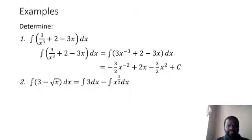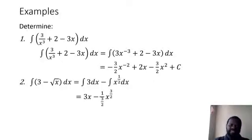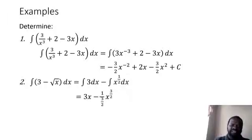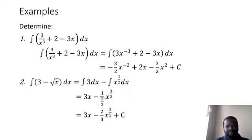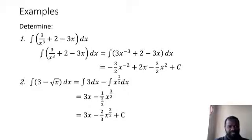For equation two, you integrate term by term. The integral of 3 is 3x. Adding one to the exponent of one half gives three over two, so you have x exponent three over two. The coefficient is 1, so you divide 1 by three over two, which gives two over three — that will be the coefficient of x exponent three over two, plus c. Please note I am not simplifying at every stage, just showing how to integrate each term.